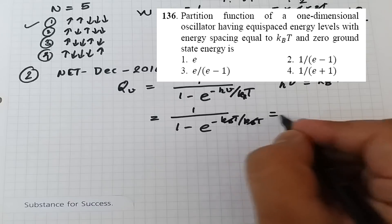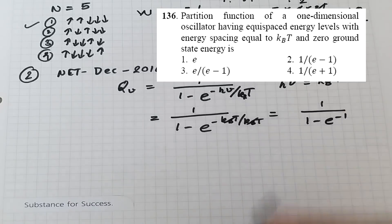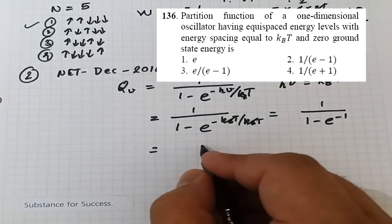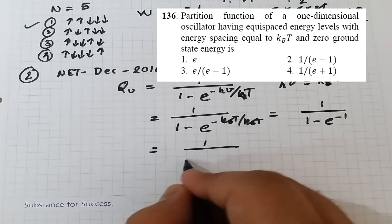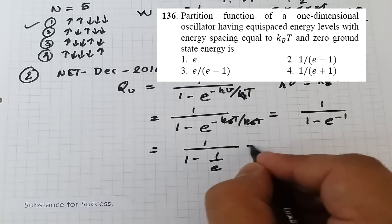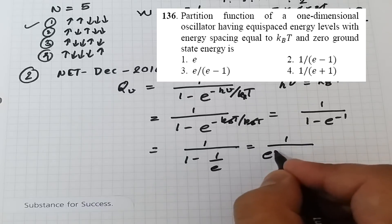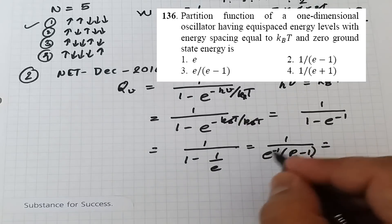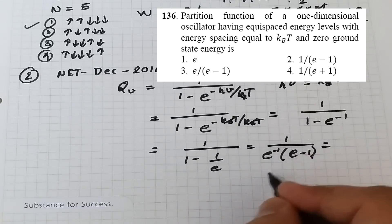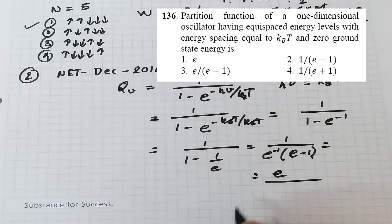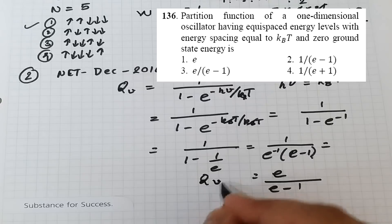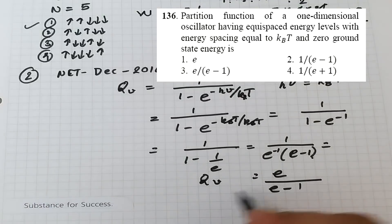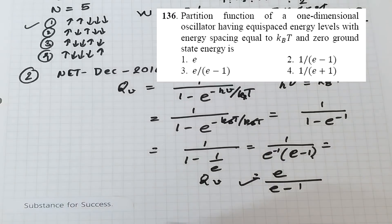Now e^(−1) = 1/e, so the denominator becomes (1 − 1/e) = (e − 1)/e. Therefore q_v = 1 / ((e−1)/e) = e / (e − 1). This is option number 3, which is the correct answer for this problem.